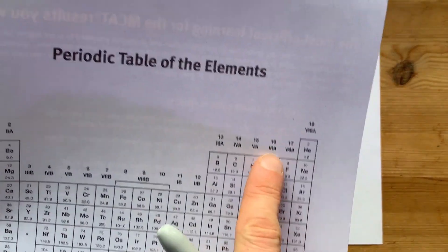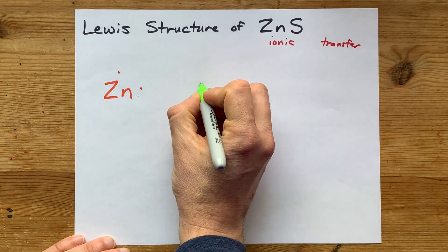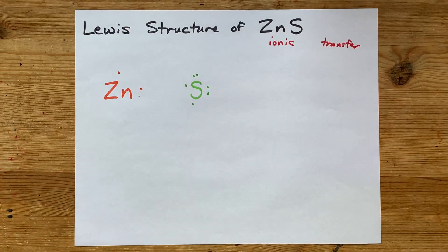Now, for sulfur, it's in group 16 of the periodic table. That means it brings six valence electrons with it. There you go.